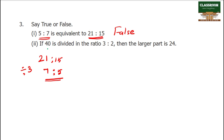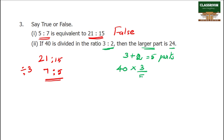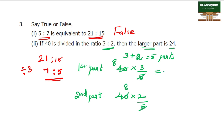Next question: 40 is divided in the ratio of 3 is to 2. Then the largest part is 24. Total number of parts: 3 plus 2 equals 5 parts. Largest part: 40 into 3 by 5. 8 threes are 24; 8 twos are 16. So the largest part is 24 — true.